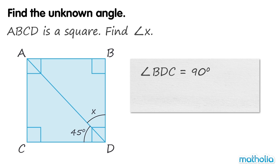We can find angle X by subtracting 45 degrees from 90 degrees. 90 minus 45 equals 45. So angle X is 45 degrees.